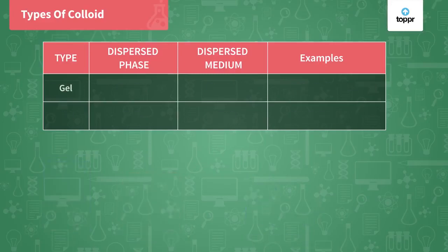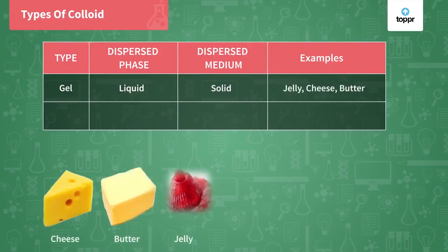Next we have gel. Gel is a type of colloid in which the dispersed phase is liquid and the dispersion medium is solid. Examples are jelly, cheese, and butter. In all these categories, there is a network of solid in which a liquid is dispersed.